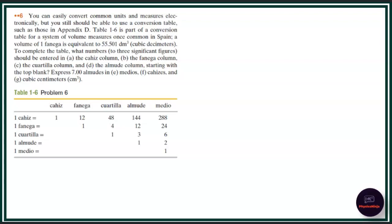Hey everyone, this is question number 6 of the chapter on measurement. Let us see the solution of this question. We have been given that you can easily convert common units and measure electronically, but you should still be able to use a conversion table. So we have been given this conversion table, and we have to convert some quantities like one chiase, one fenugula, one quartilla, one almede — starting with the top line.